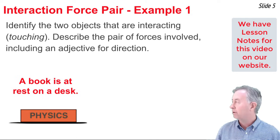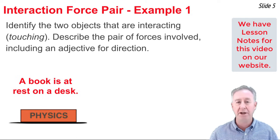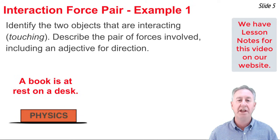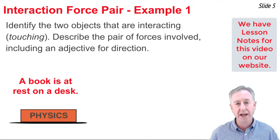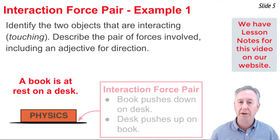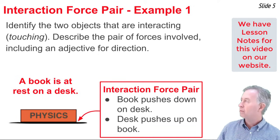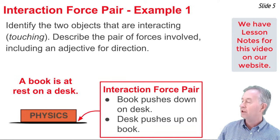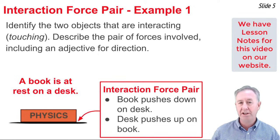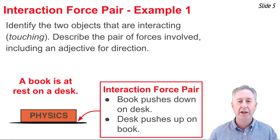In our first example, we have a book that is at rest upon a desk. The objects are book and desk. The interaction force pair would look something like this: the book pushes down on the desk and the desk pushes up on the book.